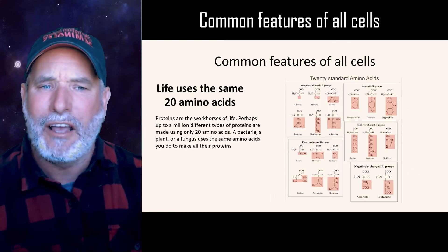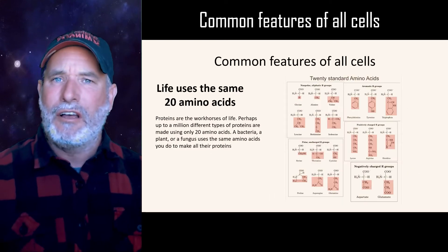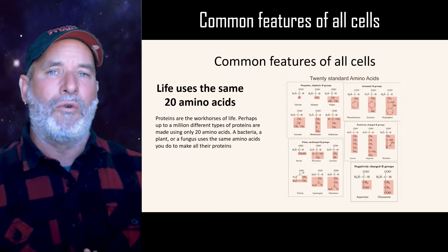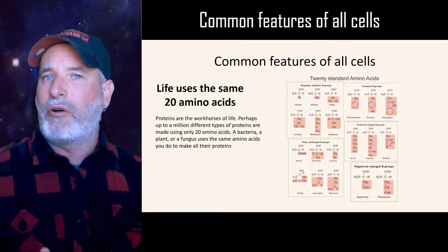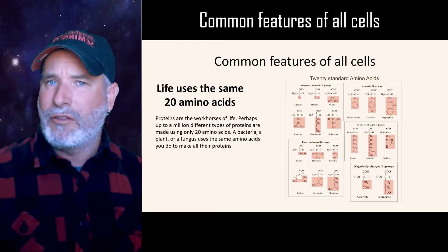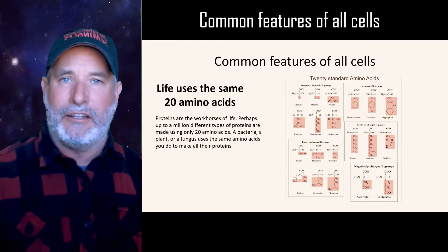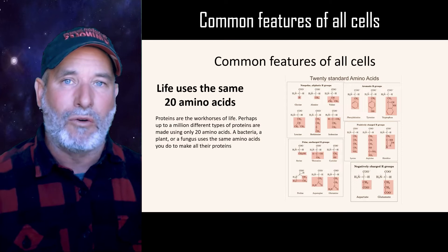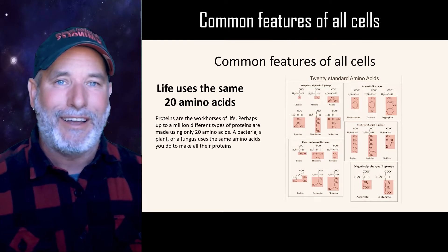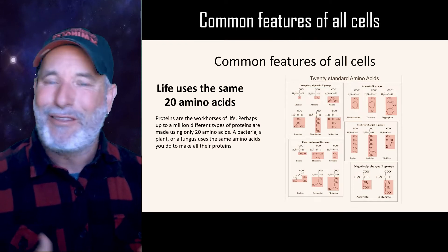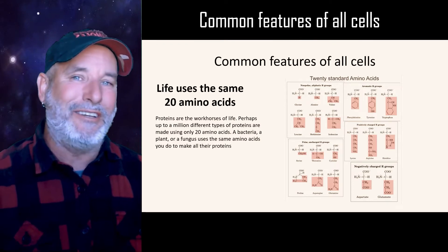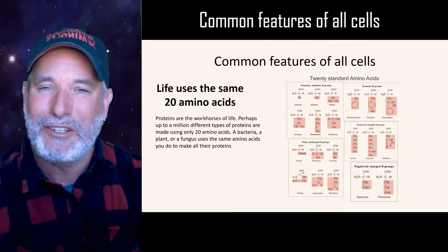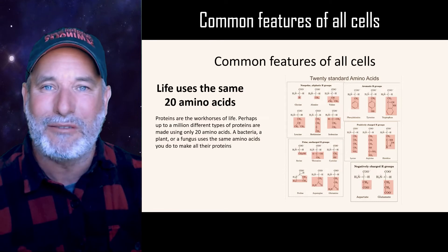Life uses the same 20 amino acids to make every protein. There are millions of proteins throughout the world, and they're all made by basically using the same 20 amino acids put together in the ribosomes.